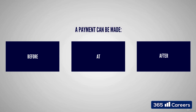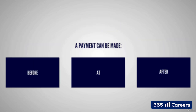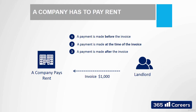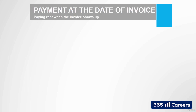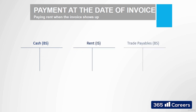Let's consider the following example. The firm that sells office equipment pays $1,000 for rent. We'll need to draw three T-accounts: Cash, Rent, and Trade Payables.